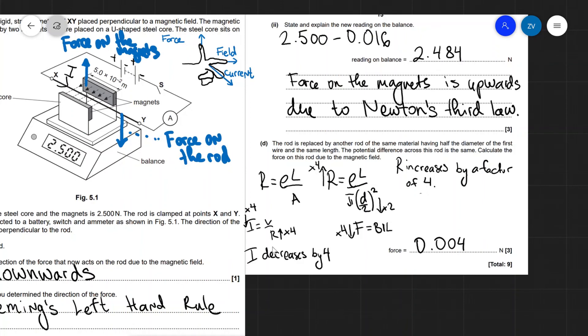Remember though, V = IR. Therefore, I = V/R. So if R increases by a factor of 4, the current will decrease by a factor of 4. And if the current decreases by a factor of 4, because F = BIL, the force will decrease by a factor of 4.